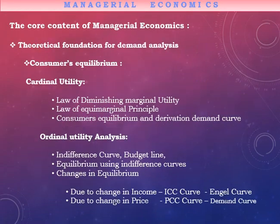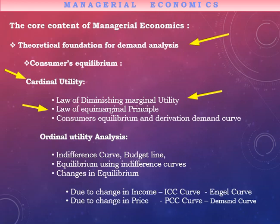Next we look at different theoretical foundations for demand analysis. First, cardinal utility — we need to talk about the law of diminishing marginal utility, which states that as more and more units of the same good are consumed, the utility derived from it decreases. Next is the law of equal marginal principle, which states that a consumer will choose a combination of goods that maximizes total utility. Consumer equilibrium is the point where demand and supply forces intersect.